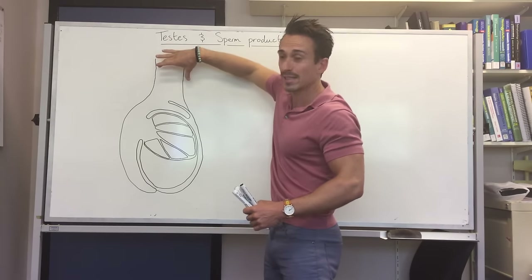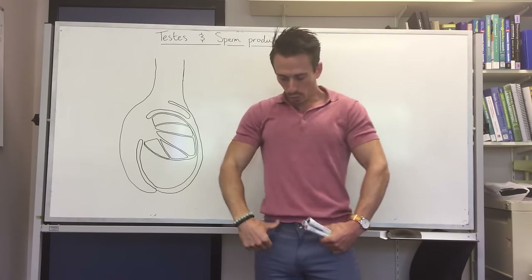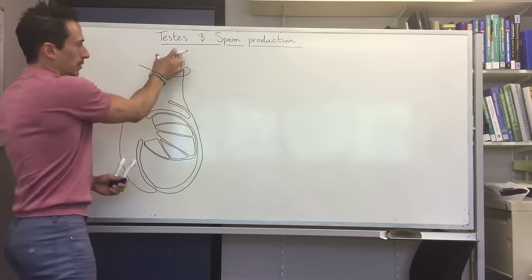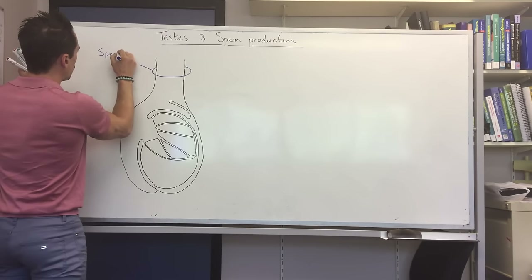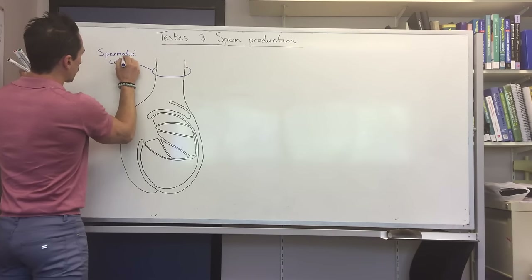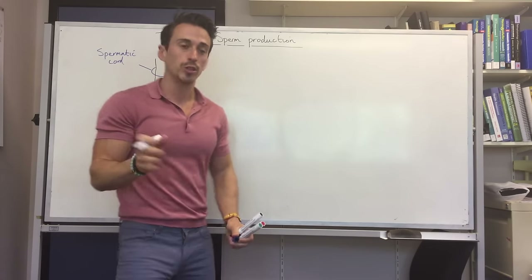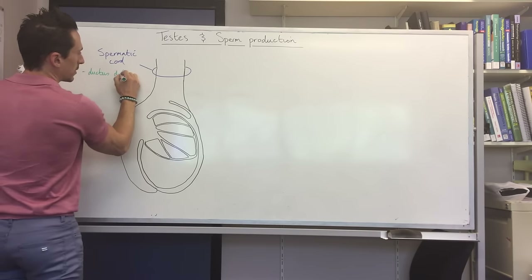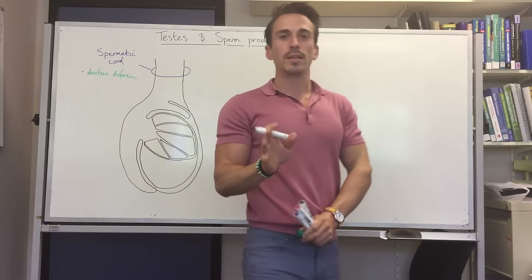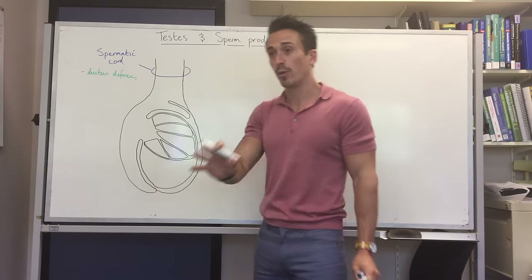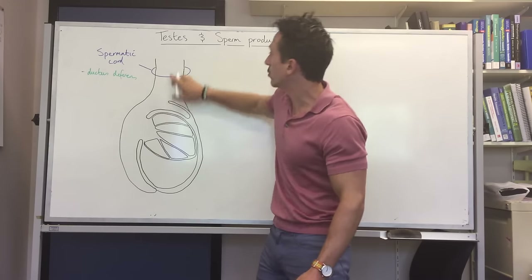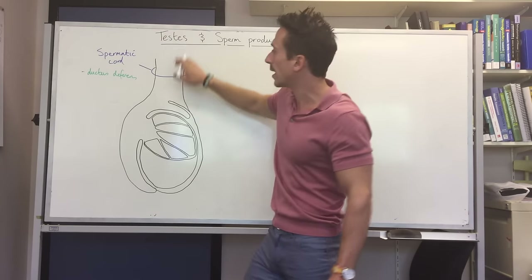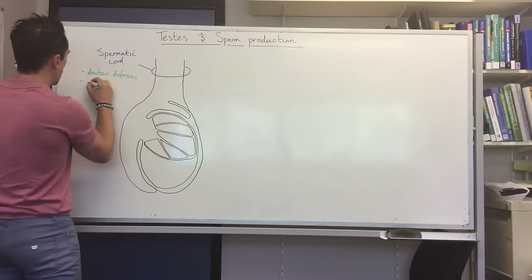Superior to the testis is what we call the spermatic cord, which moves from the testis up into the abdomen. Within the spermatic cord are a number of different anatomical structures. For example, there's the ductus deferens — sometimes called the vas deferens — which is a tube that carries sperm produced in the testes up to the rest of the ductal system of the male reproductive tract.